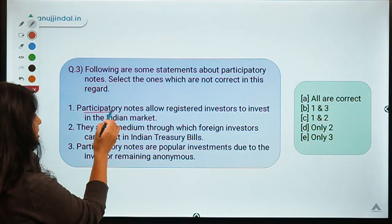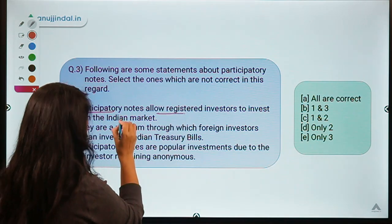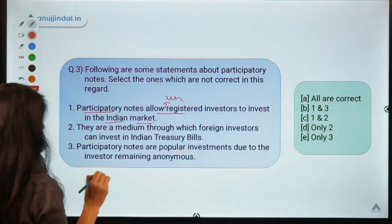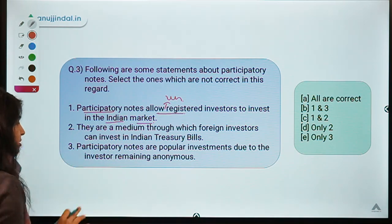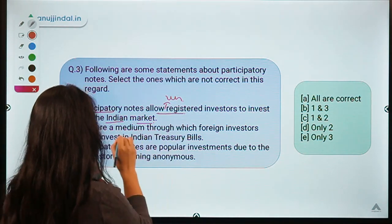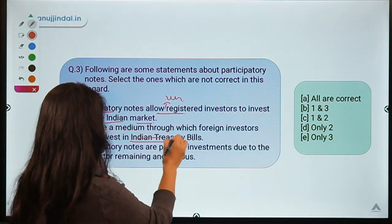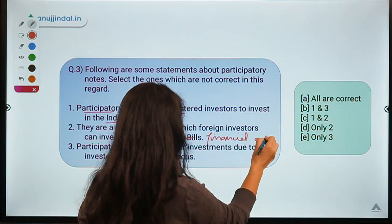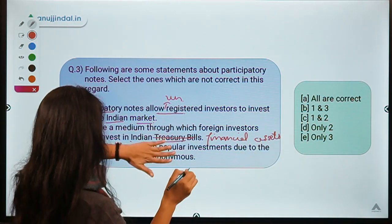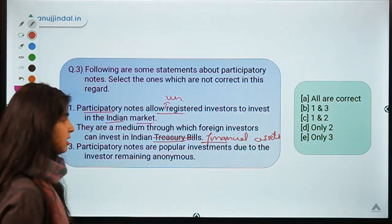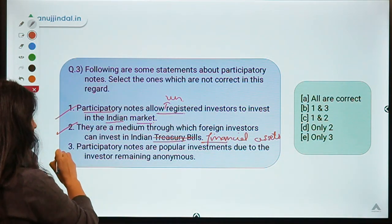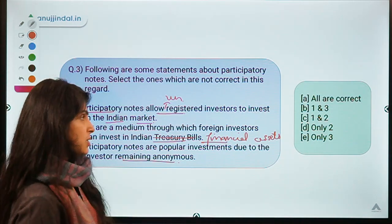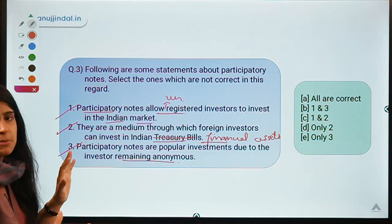Looking at the statements: statement one says participatory notes allow registered investors to invest in the Indian market — this is not correct, because they allow unregistered investors. Statement two says they are a medium through which foreign investors can invest in Indian treasury bills — this is not correct, as they cover a range of financial assets, not just treasury bills. Statement three says they are popular because of the anonymity they provide to foreign investors — this is correct.